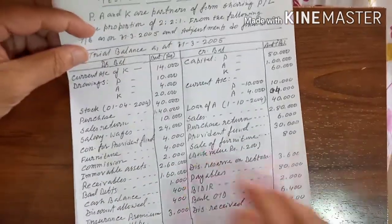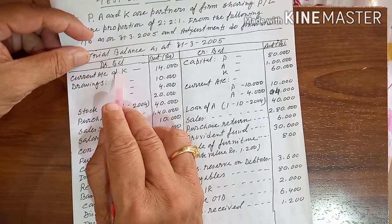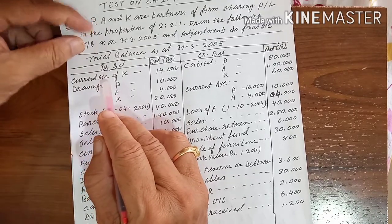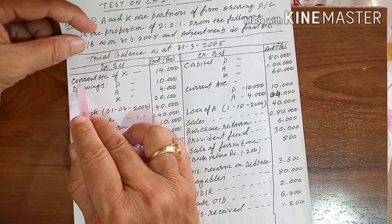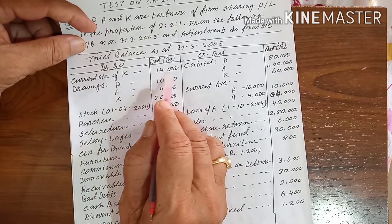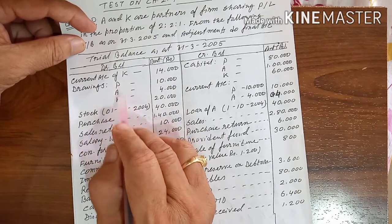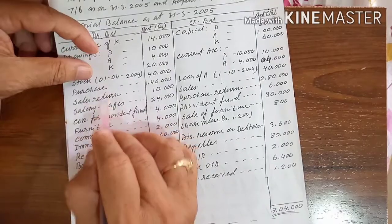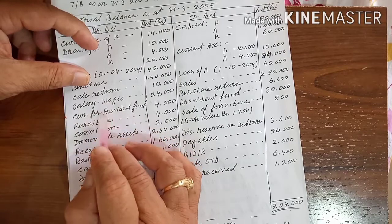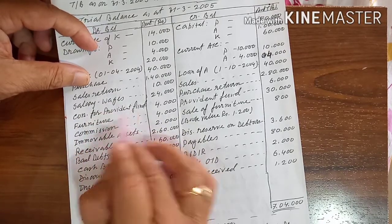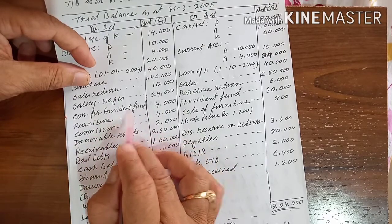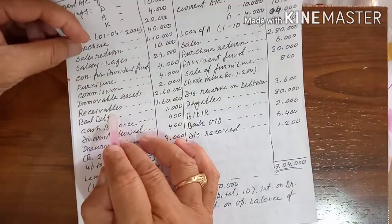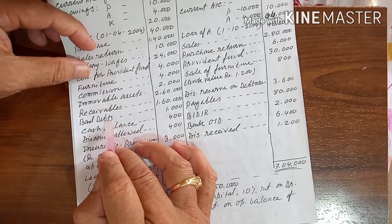The debit side includes: current account of K which has a debit balance, drawings of P, drawings of A, drawings of K, opening stock for 2004, purchases, sales return, salary and wages, contribution to the provident fund — Rs 4,000 on the profit and loss account debit side — furniture, commissions, immovable assets, receivables, bad debt of Rs 1,000.